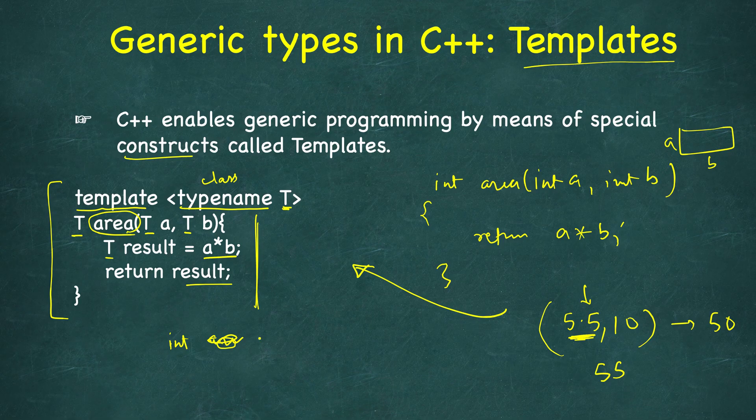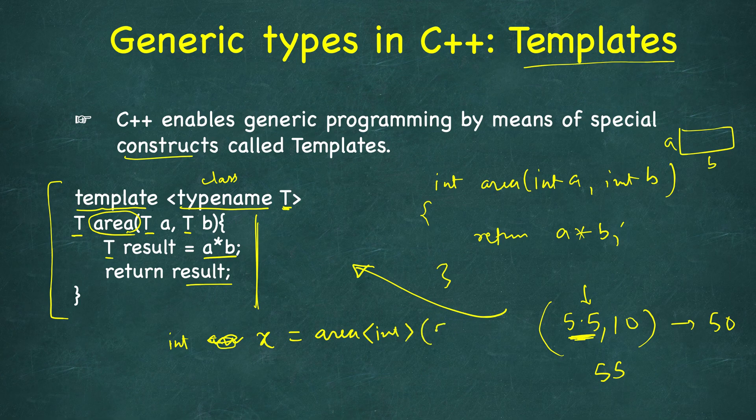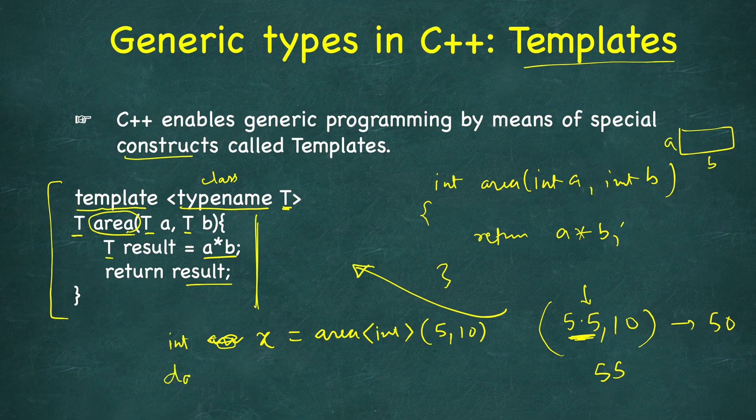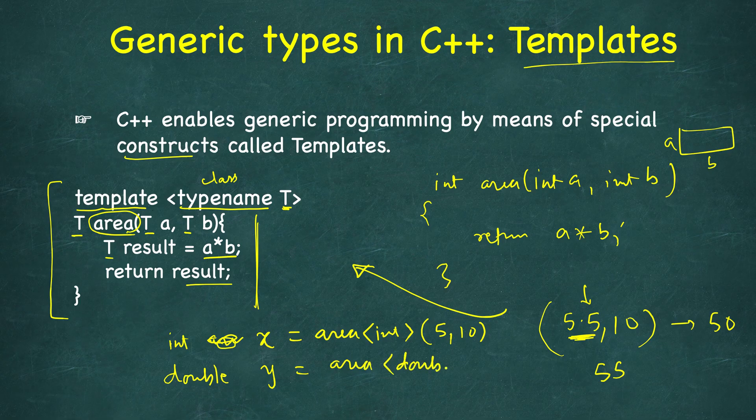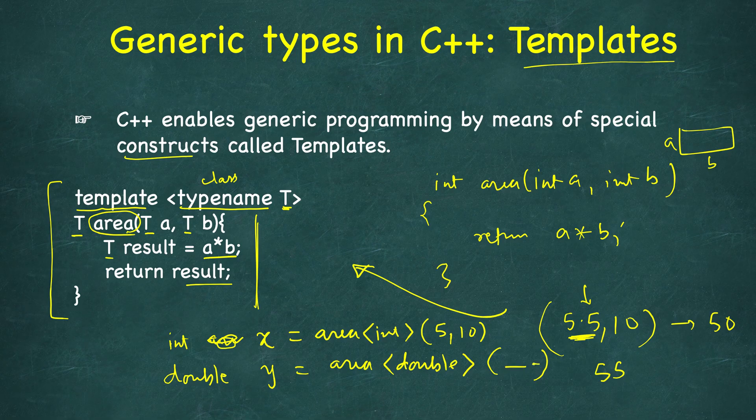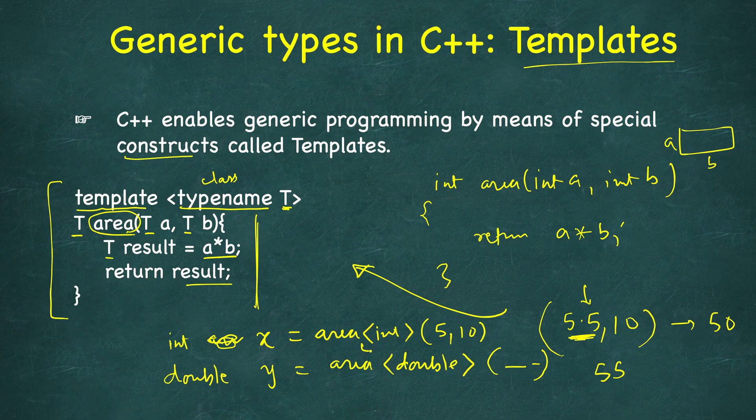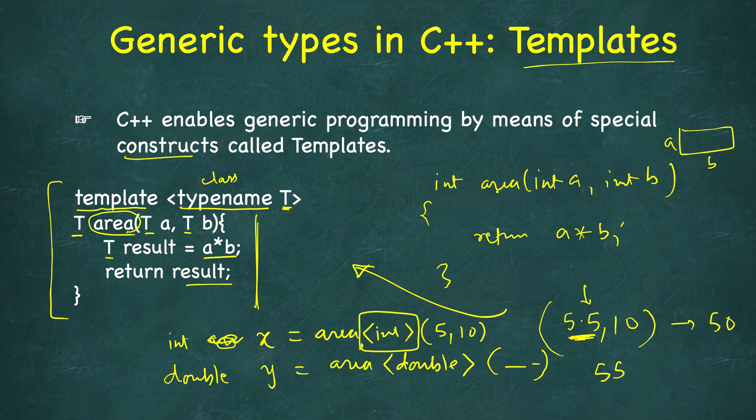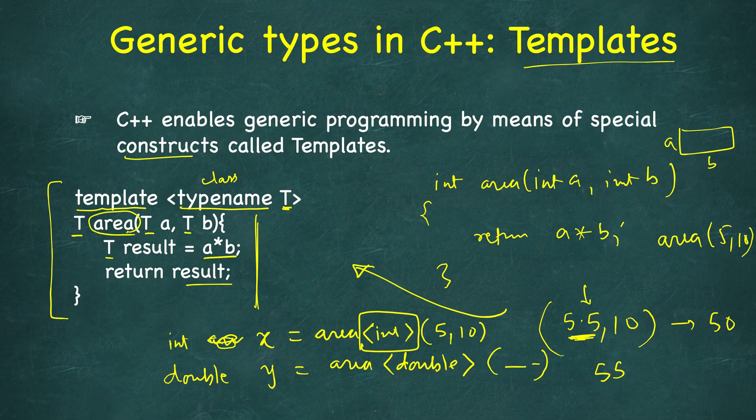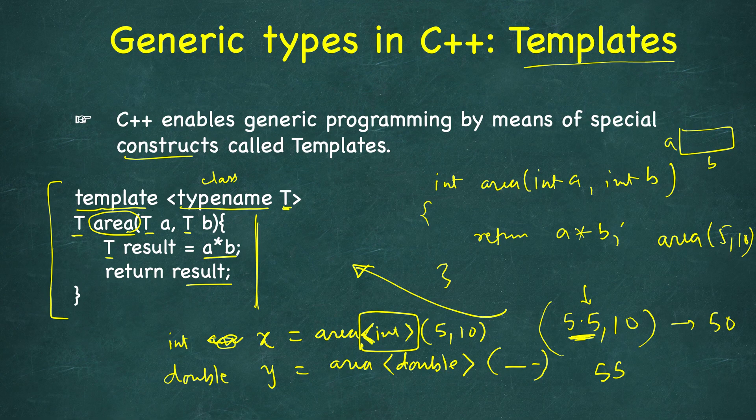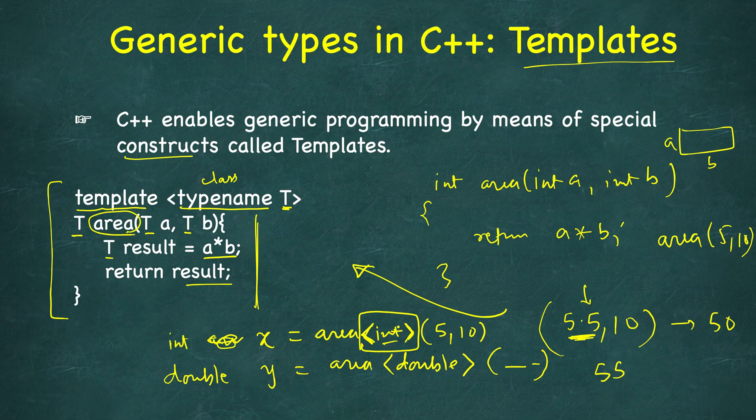Then while calling, we will call it like this: let's say int x equal to area<int>(5, 10). Similarly, if we want for double, then double y equal to area<double> and then specify the parameters here. At the time of using this implementation of area, we are passing the type in these angular braces. For this function you would simply call area(5, 10), here also you can call that, but it's better to specify the type explicitly in these angular brackets.